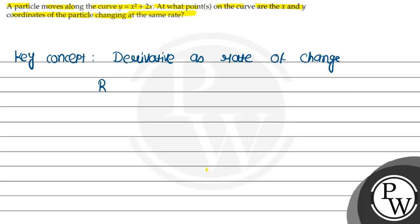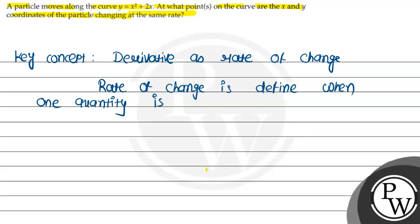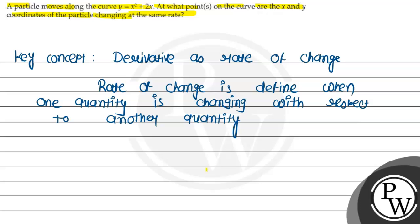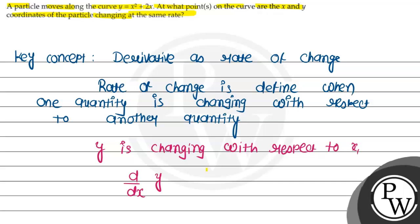The rate of change is defined when one quantity is changing with respect to another quantity. For example, take y is changing with respect to x. With respect to x, what change is going on? Y. So this is dy/dx, that is rate of change of function y.